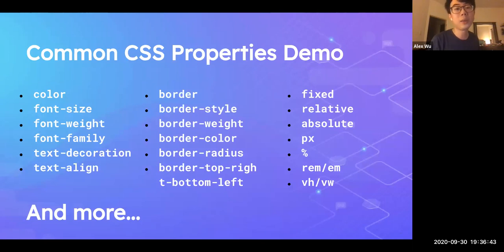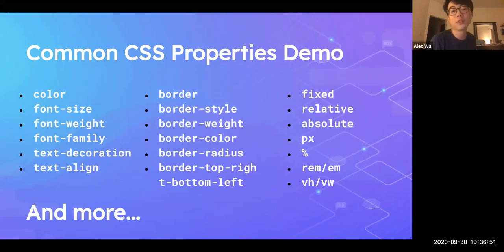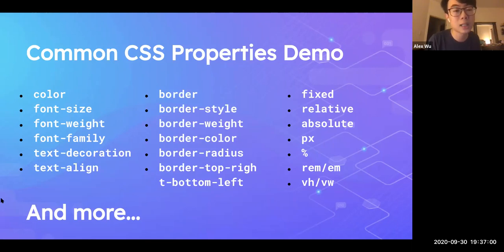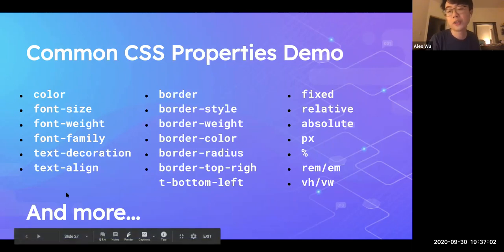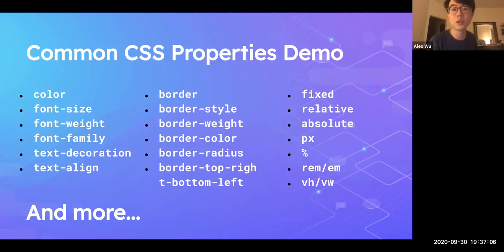Here are some very common CSS properties. 'Color' changes the color of text. 'Background-color' changes the background color of an element or image. There's also 'font-size,' 'font-weight,' and 'font-family.' I think it'll be better if I just do a quick CSS property demo and you can follow along.